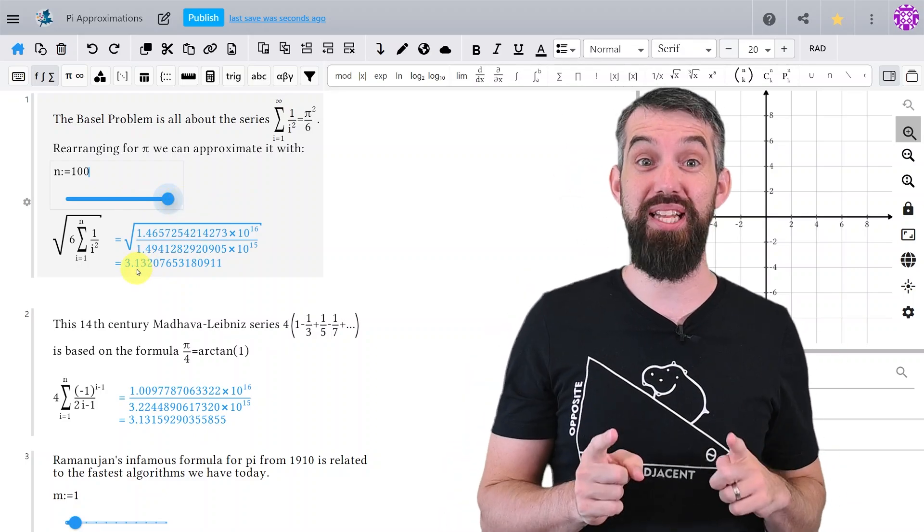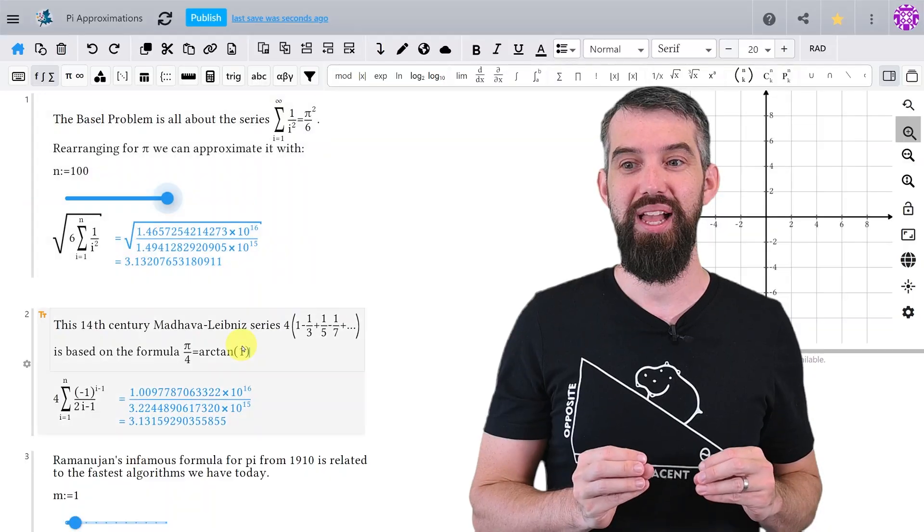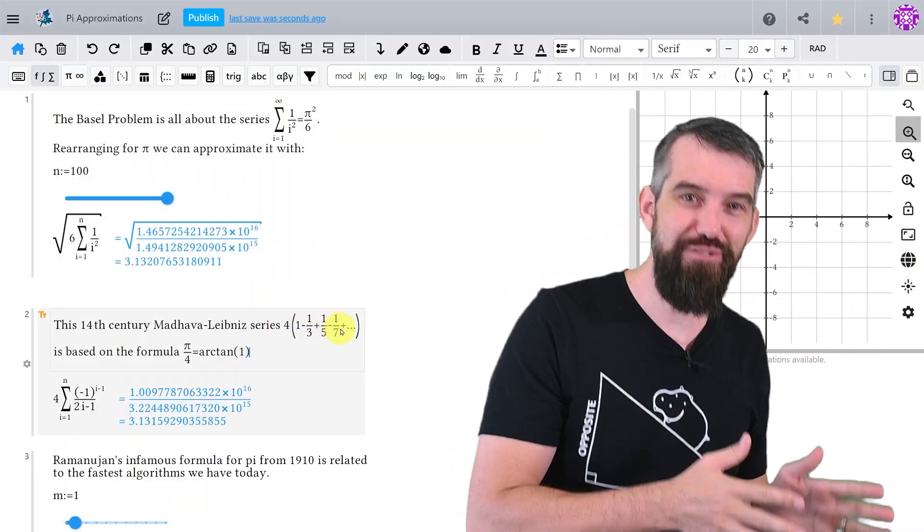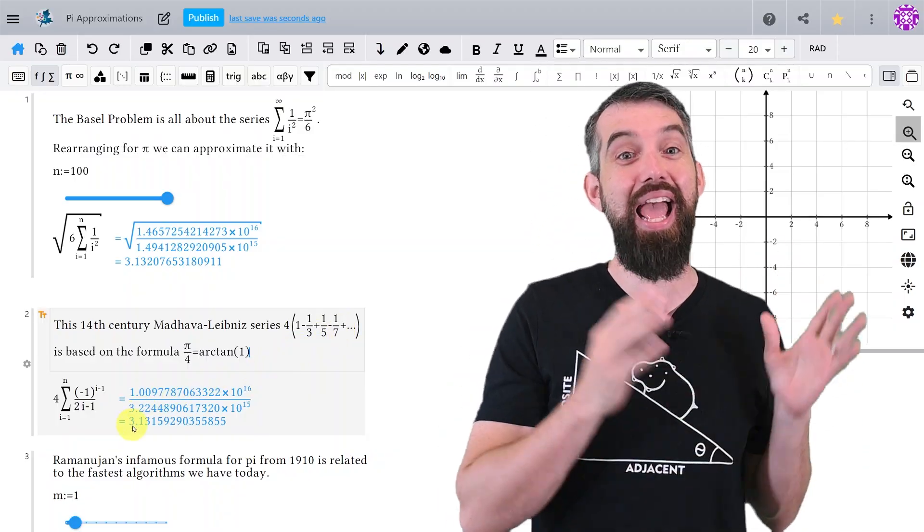I'm quite a fan of the 14th century Mahava-Leibniz formula. This is four times, and then it's 1, minus a third, plus a fifth, minus a seventh, plus a ninth, and so forth.